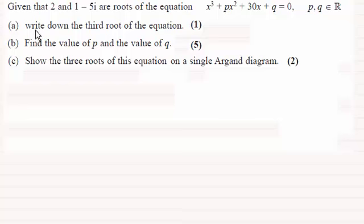Okay, welcome back then if you had a go. Now for the first part here we've got to write down the third root of this equation and we know two of the roots: 2 and 1 minus 5i. Being a cubic equation it's obviously going to have three roots, and if one of those roots is a complex number, the other root will be the complex conjugate of it. Roots always occur in conjugate pairs.